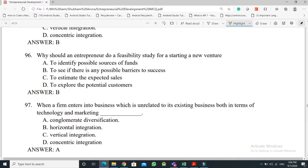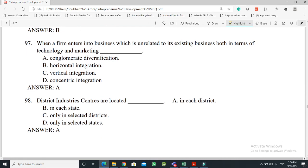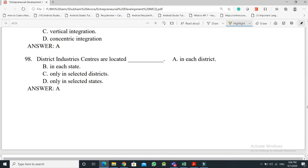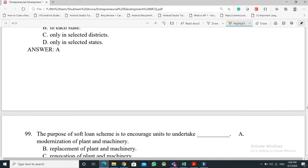Question No. 96: Why should an entrepreneur do a feasibility study for starting a new venture - the answer is Option B, To see if there are any possible barriers to success. Question No. 97: When a firm enters into business which is unrelated to its existing business both in terms of technology and marketing - the answer is Option A, Conglomerate diversification. Question No. 98: District industry centers are located - the answer is Option A, In each district.